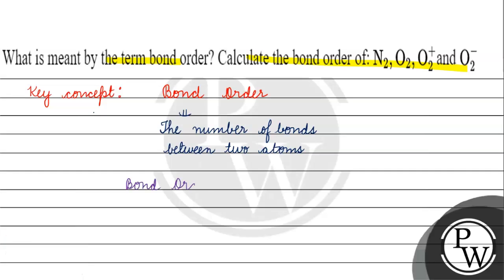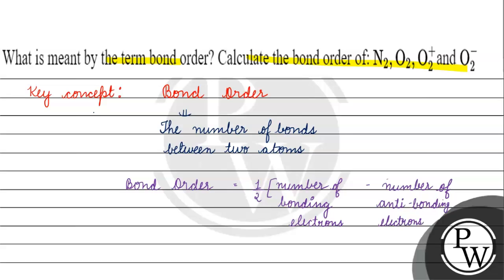The formula for bond order is: it is half the number of bonding electrons minus the number of anti-bonding electrons. Bond order equals half of (number of bonding electrons minus number of anti-bonding electrons).